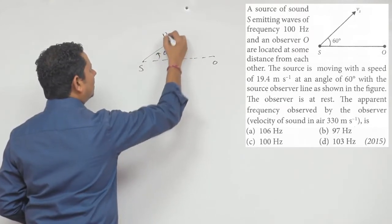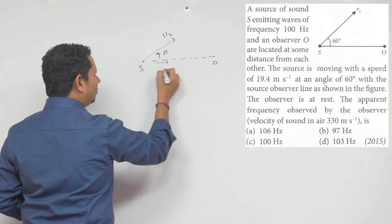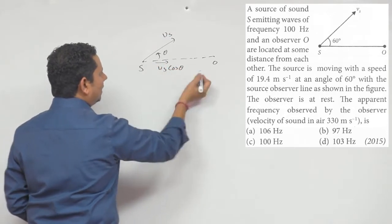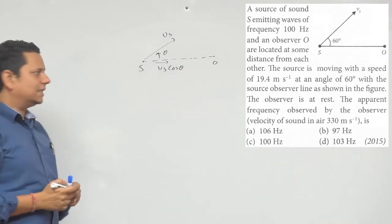this is a velocity of source, so here, the velocity of source is effective, Vs cos theta, and we can use this.